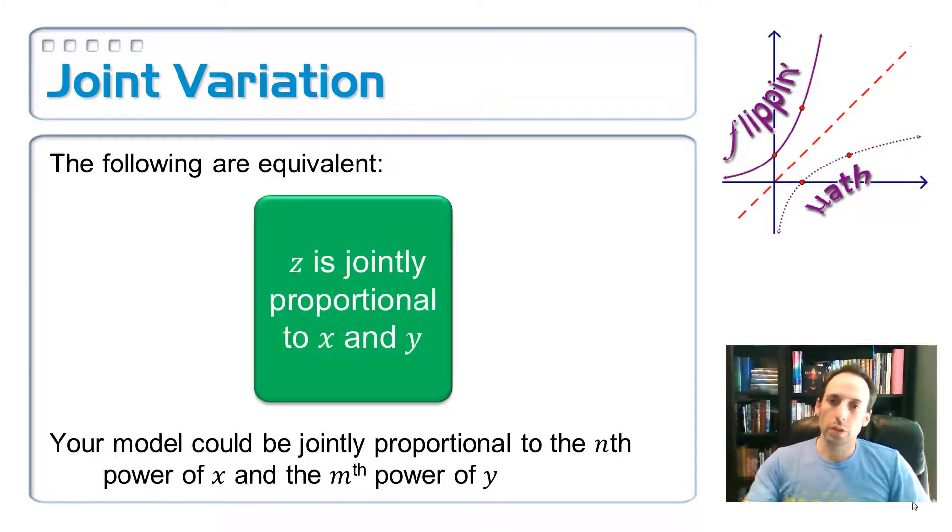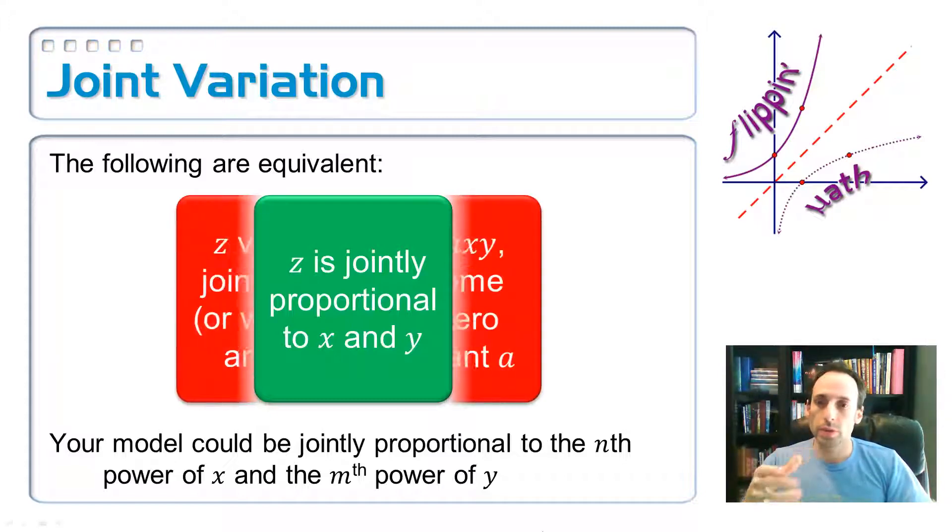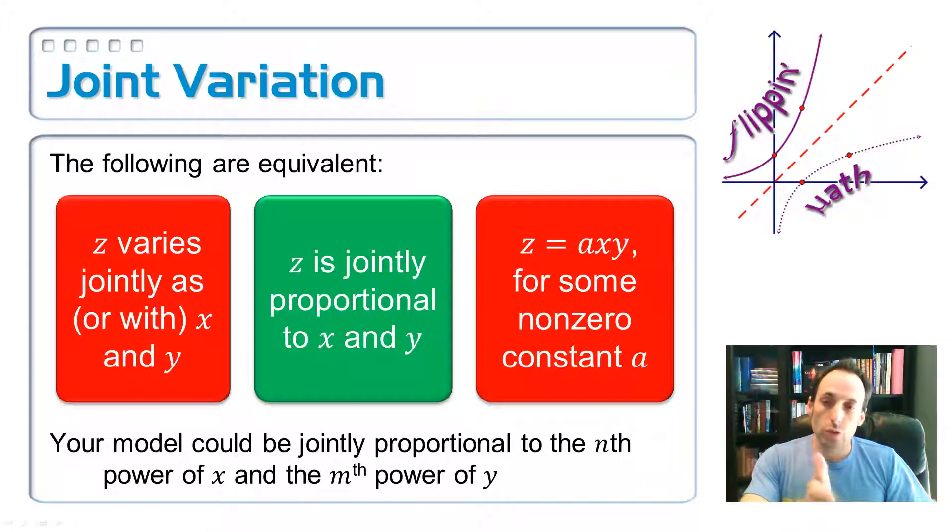The first one is z is jointly proportional to x and y. So here you've got three variables total and z is jointly proportional to two others. Over there on the left-hand side, z varies jointly with x and y, means the same thing as jointly proportional.